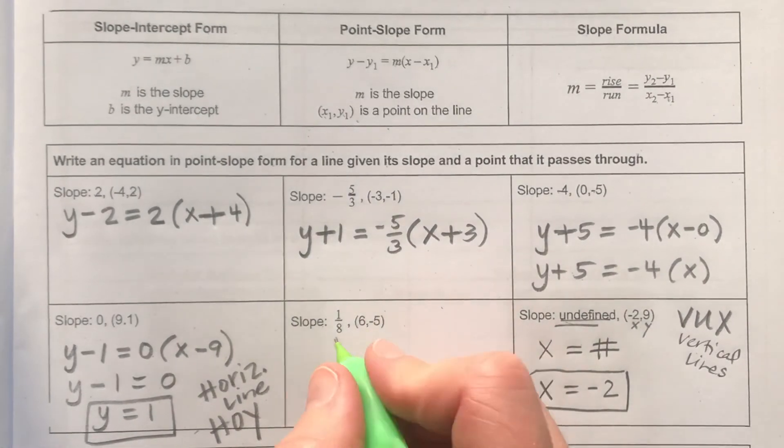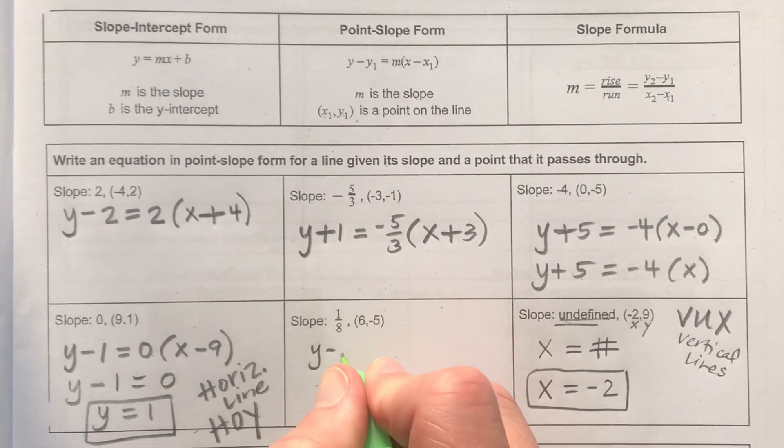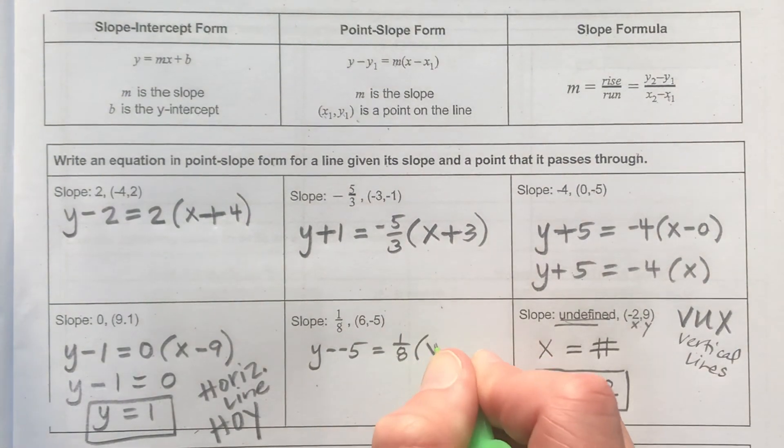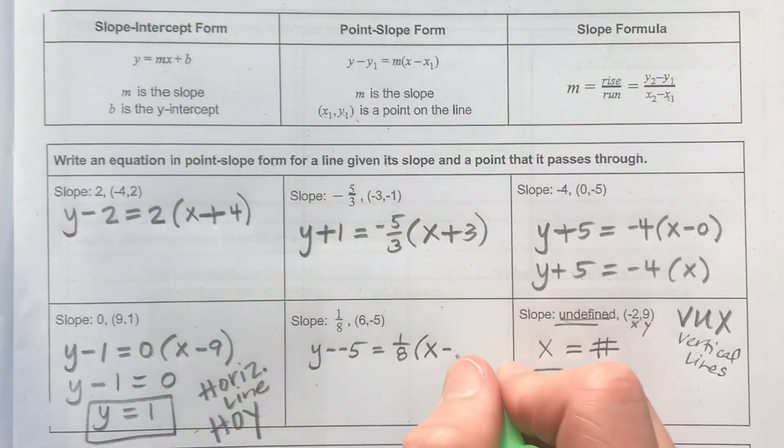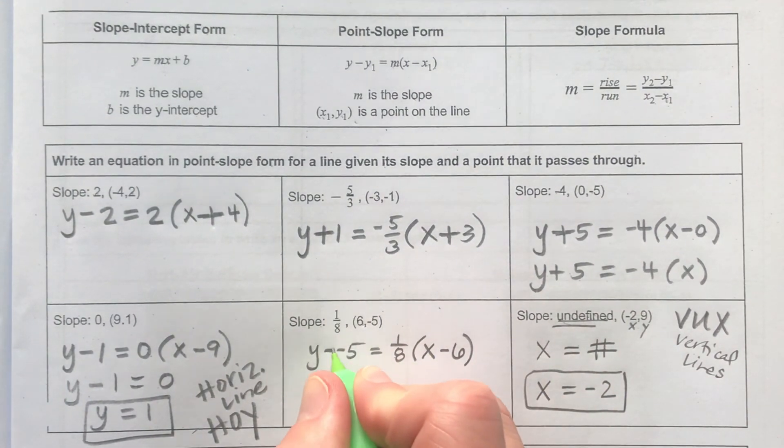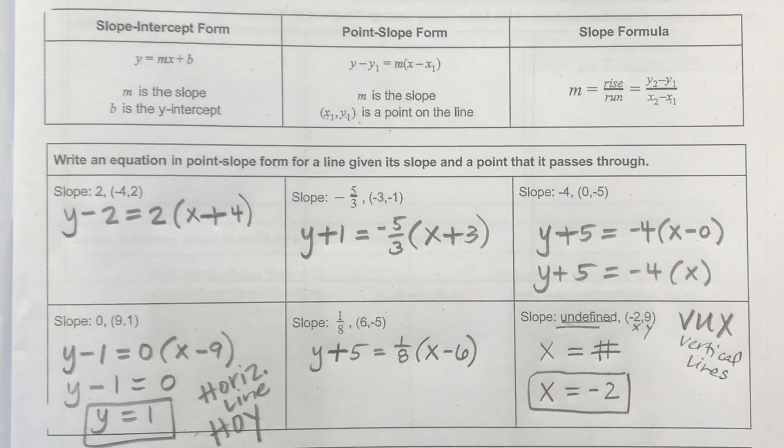Now the last question here, y minus a y value of negative 5 will equal my slope, 1 over 8. And then in parentheses, x minus the x value of 6. The last thing I'll do to simplify would just be my minus and negative, I'll turn to a plus.